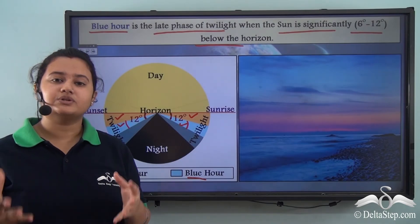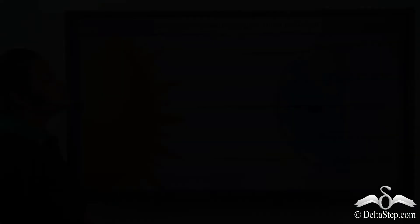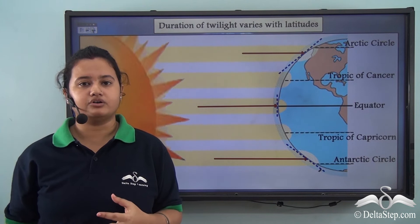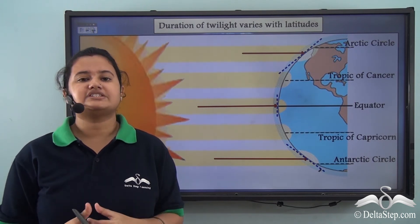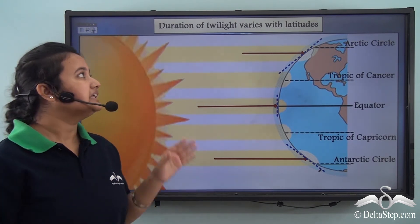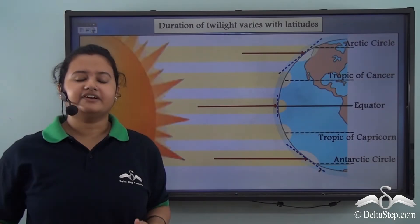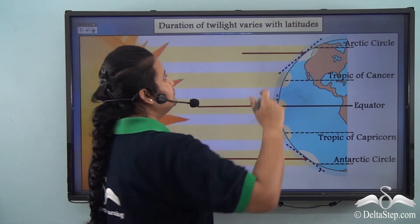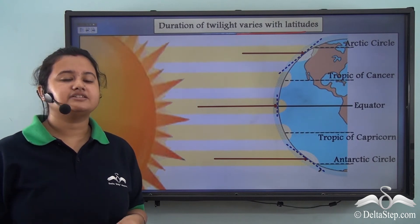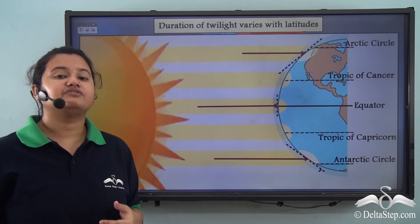Both the golden hour and blue hour are ideal for photography. Till now we have understood the meaning of twilight and how twilight occurs. We also learnt about different phases of twilight like golden hour and blue hour. Now, the duration of twilight is not uniform throughout the globe. Rather, the duration of twilight varies with latitudes.